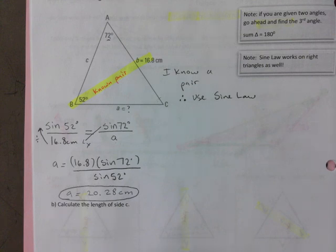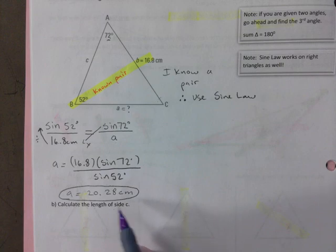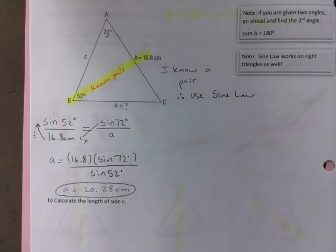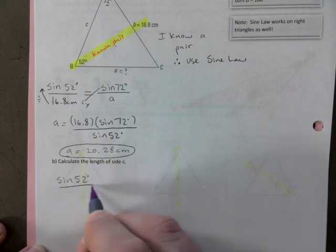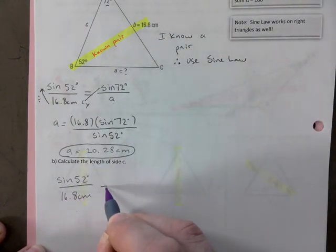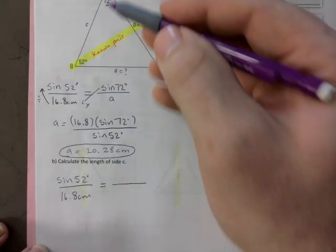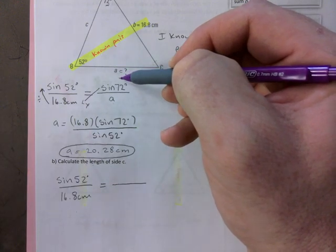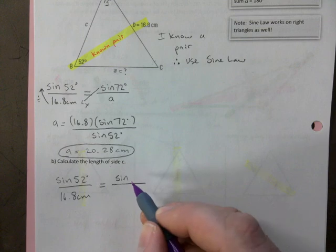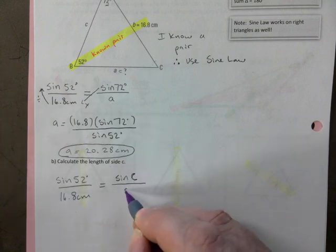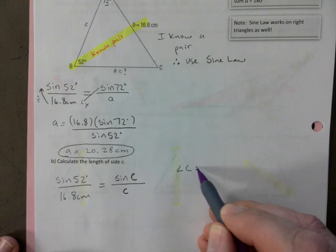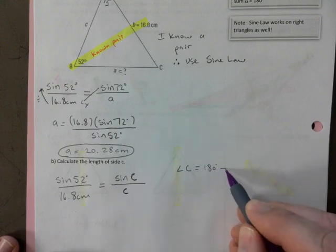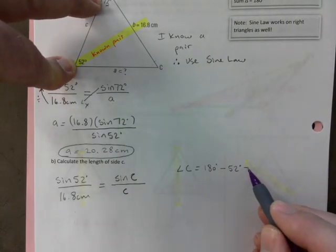Take it one step further. Calculate the length of side C down here. How would you do that? I will tell you this. Once you have a pair, use it again. So I will start with my pair. Sine of 52 over 16.8 is equal to. Sine of 72 will not help you because it will find A. What do I need here? Yeah. Some of you are already calculating. I need sine of C in order to solve for side C. I don't know what C is just yet. I will figure that out.